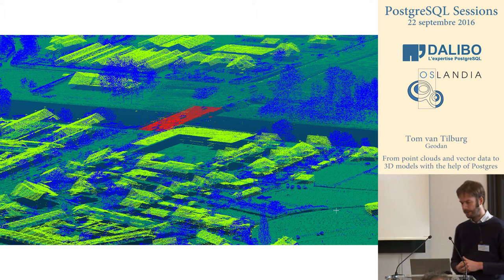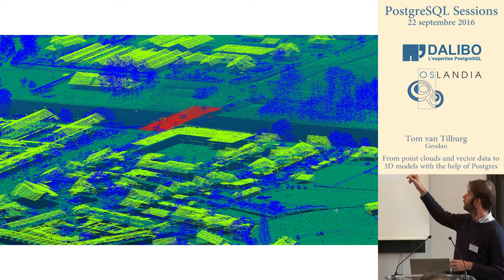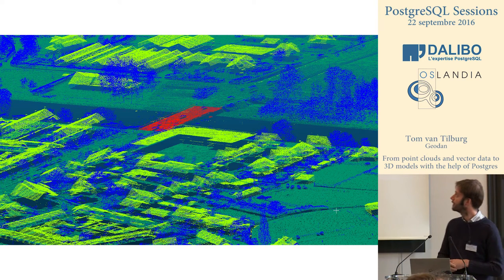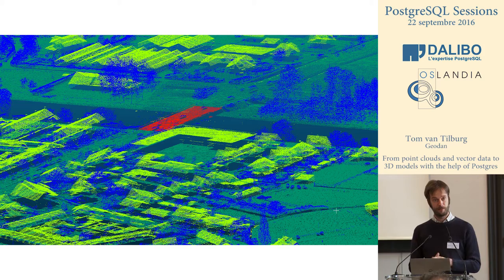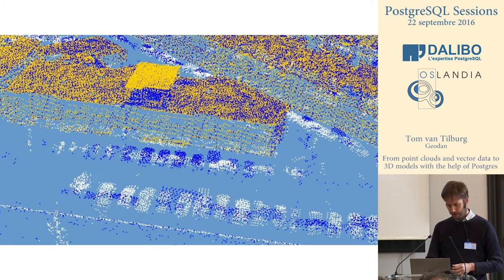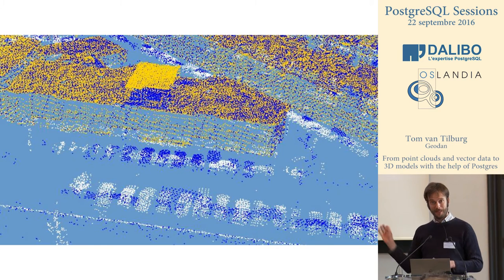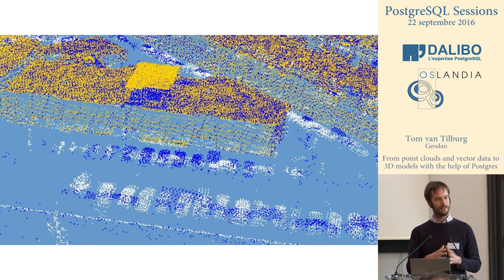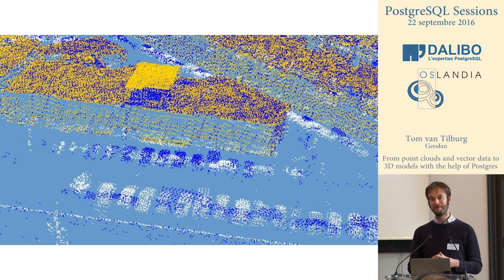The classification is interesting: blue is trees, light green is buildings, and the red part is bridges. So we have bridges separated in the point cloud. For us, it's also interesting because we have datasets with an interval of about eight years to compare them.